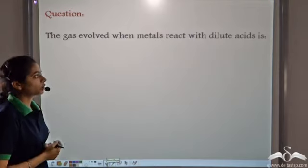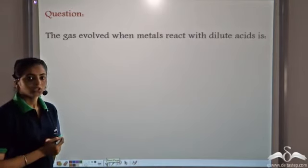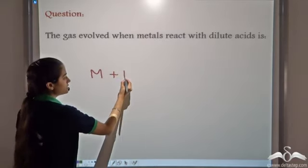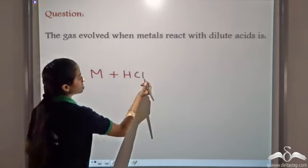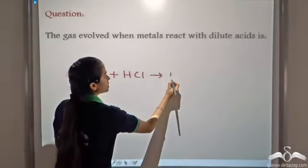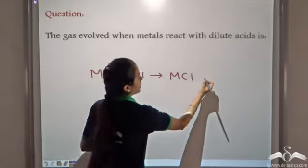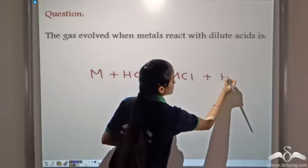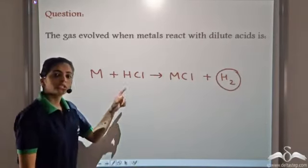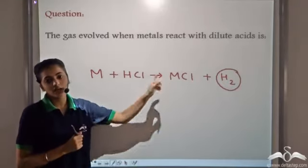Which gas is evolved when metals react with acids? When metals react with acids — for example HCl — they form the corresponding salt, MCl, and hydrogen gas is released. So the gas evolved when metals react with acids is hydrogen gas.